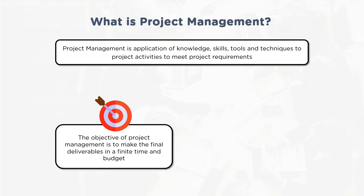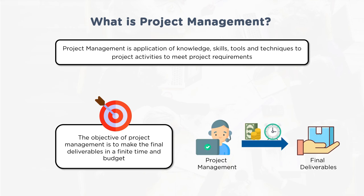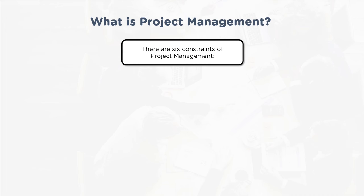As defined in PMI's PMBOK, project management is the application of knowledge, skills, tools, and techniques to project activities to meet project requirements. Every project has an objective to accomplish. The objective of project management is to make the final deliverables in a finite time and budget. This involves having a clear understanding about deliverables, required resources — human, technical, financial — and managing those throughout the project life cycle.